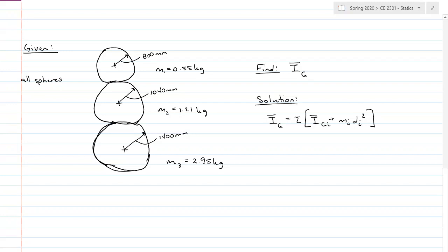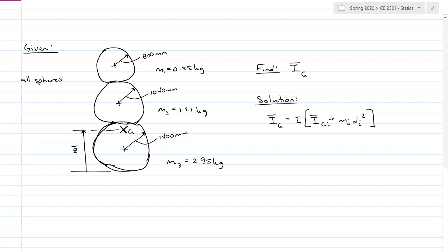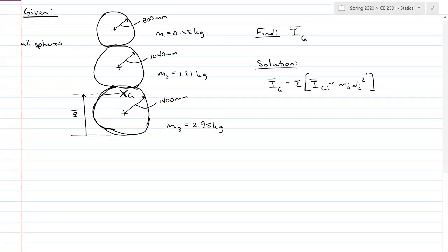So the very first thing that I need to find is where the mass center is for my shape. I'm going to do this vertically from the bottom, so I'm going to set that as distance Z bar. And Z bar is equal to the sum of each mass and their centroid divided by the mass of the entire thing.